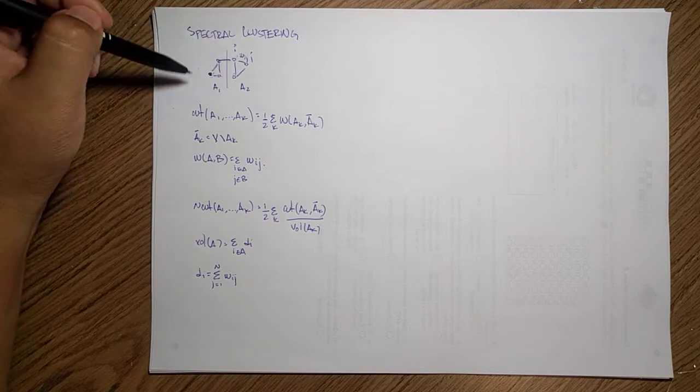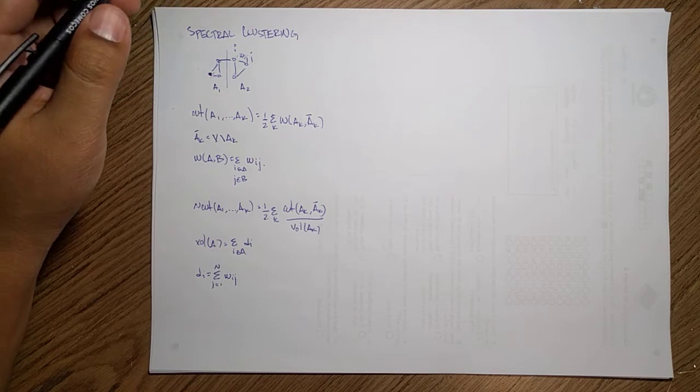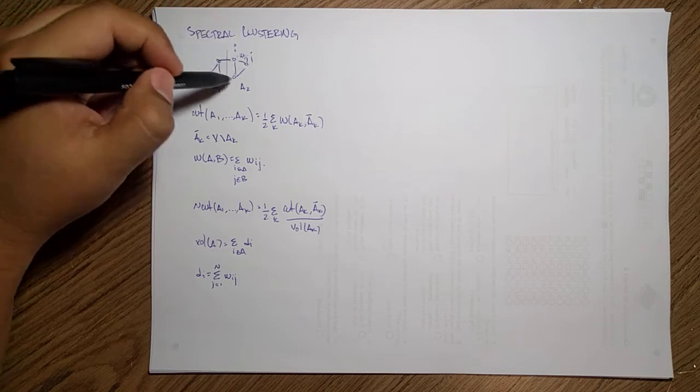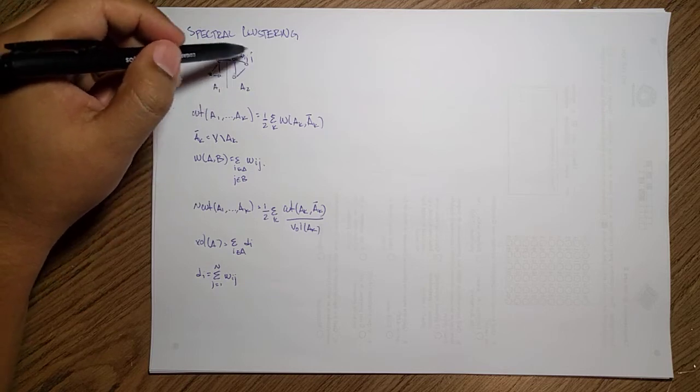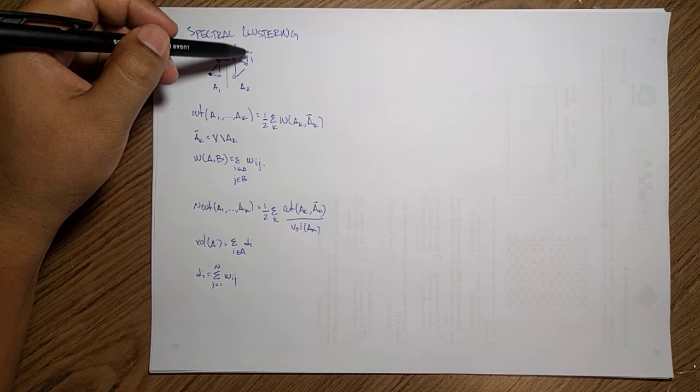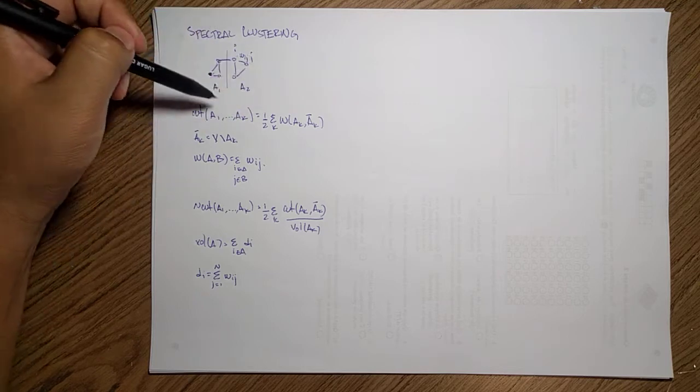Depending on how we define these weights, we may obtain different clusters and different ways of connecting the data. This was really useful in computer vision, for instance, to perform segmentation in objects. The whole trick here is how to select these weights based on the data in such a way that when you perform the cut, it obtains the best segmentation possible.